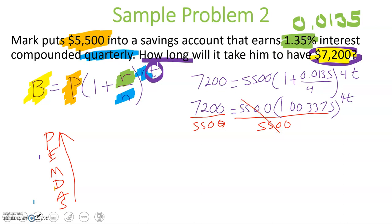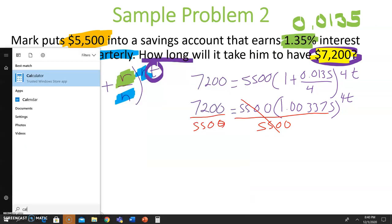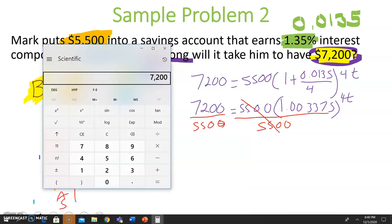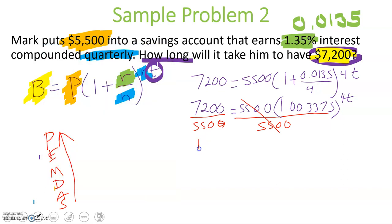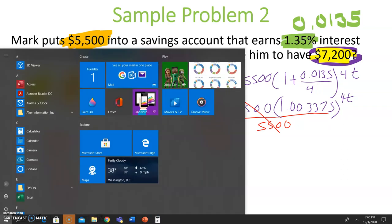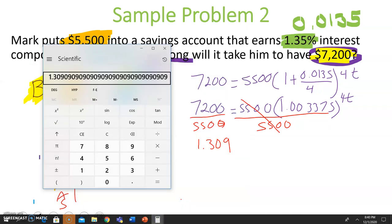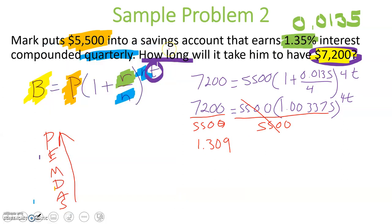On the right-hand side, 5,500 divided by 5,500 is 1. So they cancel. And then on the left-hand side, we have 7,200 divided by 5,500, which is about 1.309. So we're going to write that. And it is repeating, so I cannot write the whole thing. So 1.309. And let's just quickly confirm that. 1.309, those match, beautiful.